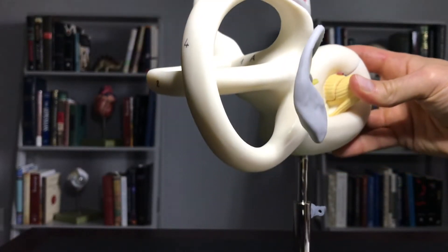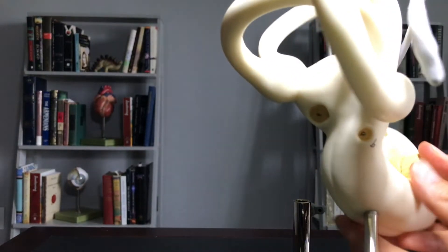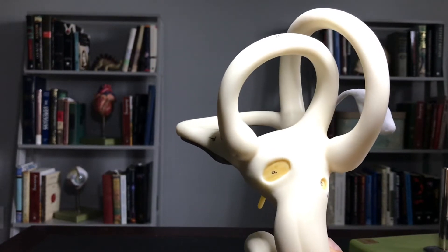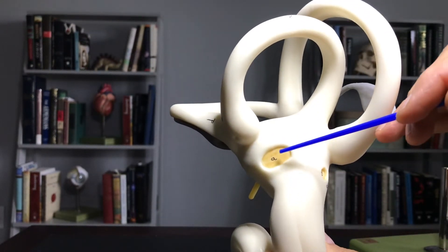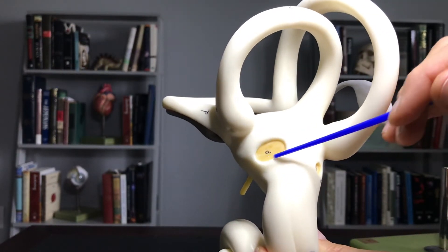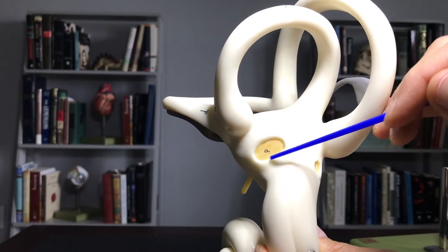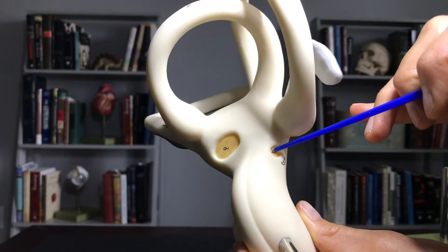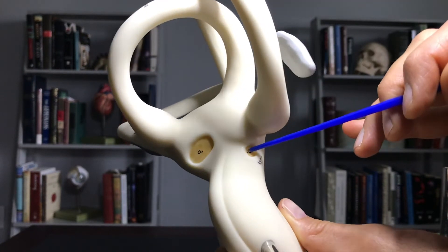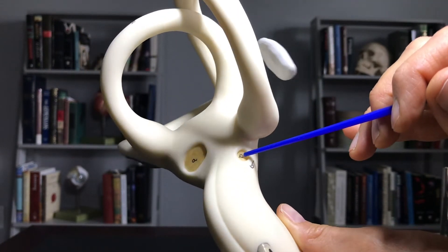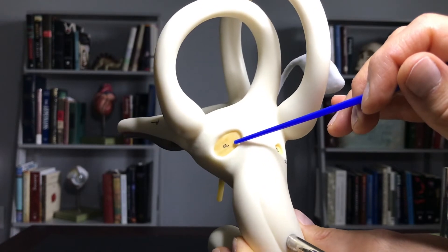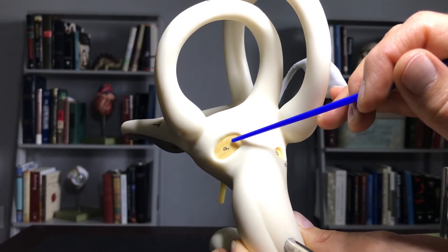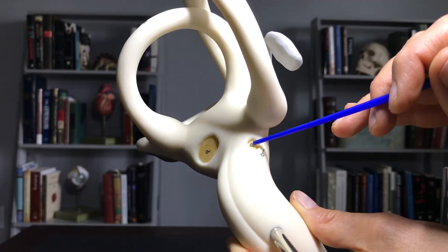If I show you a different view, you can see pretty clearly two different shapes underneath here. The oval shape you see right here is the oval window. The round shape right here is the round window. The oval window, of course, is where the base of the stapes is going to sit on. The round window is the structure you see here.